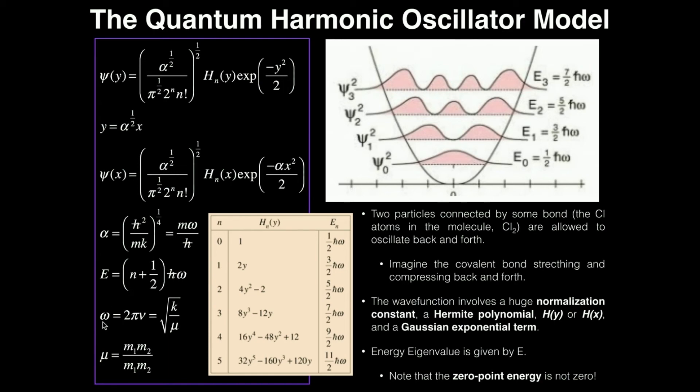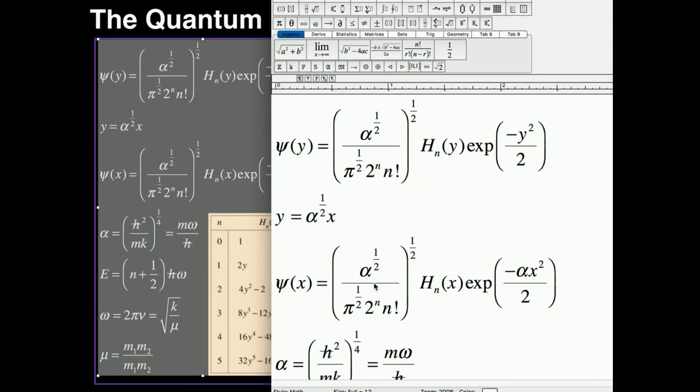Another way you can calculate this angular velocity is if you're given the frequency. So you can actually take 2 pi times the frequency, and that will actually give you omega. And this frequency is the frequency of oscillation, since we're dealing with an oscillator. You can equivalently find the angular velocity by taking the spring constant and dividing by what's called the reduced mass, and then taking the square root of that. That will also give you this angular velocity.